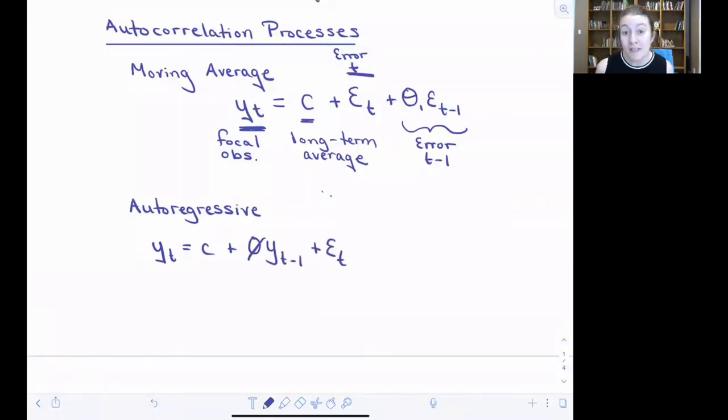I'm going to quickly write the equation for an autoregressive process for a time series. You'll see a variety of things that are very similar between the moving average equation and the autoregressive equation. Obviously in both cases, we're predicting some focal observation at time t. We have an error term related to that observation at time t.